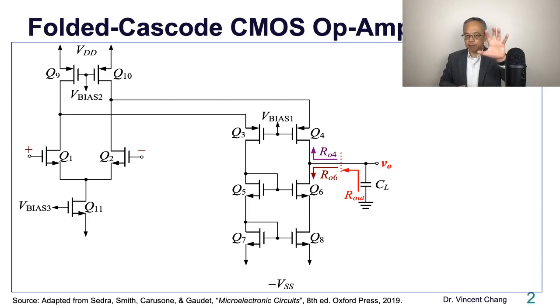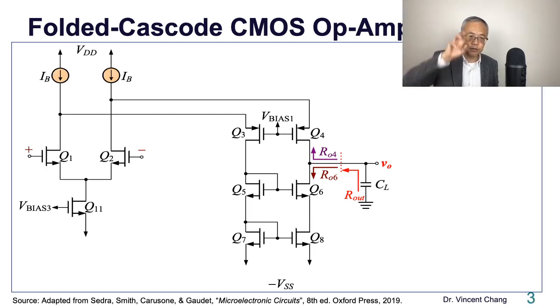It is composed by the NMOS input differential pair, cascode transistors Q3 and Q4, and Q5, Q6, Q7, Q8 play the role of the cascode current mirror. So now for the sake of simplicity, let's try to do this. Let's just replace the transistor symbol into a circuit symbol, the constant current source.